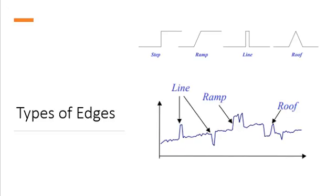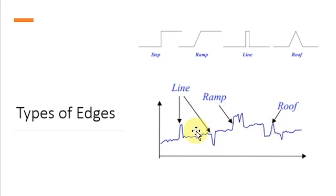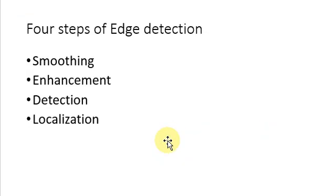So, types of edges. Basically there are four types of edges: step edge, ramp edge, line, and roof. Here we can see in the diagram: this is the line edge, ramp edge, roof edge, and step edge is just a simple or small step.